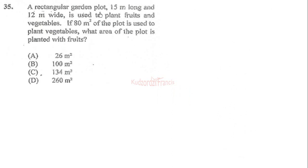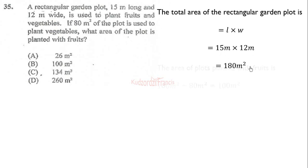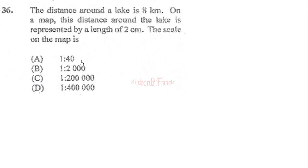Item 35: a rectangular garden plot 50 meters long and 12 meters wide is used to plant fruits and vegetables. If 80 square meters of the plot is used to plant vegetables, what area is planted with fruits? The total area is length times width: 15 times 12 equals 180 square meters. Subtracting the vegetable area: 180 minus 80 equals 100 square meters. The correct answer is B.